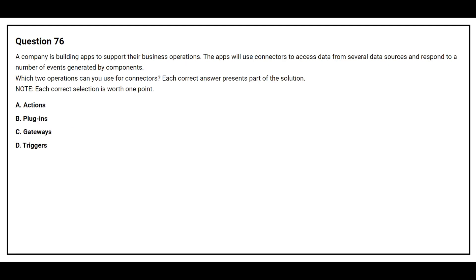Question number 76. A company is building apps to support their business operations. The apps will use connectors to access data from several data sources and respond to a number of events generated by components. Which two operations can you use for connectors? Options: A) actions, B) plugins, C) gateways, D) triggers. The correct answers are option A: actions, and option D: triggers.